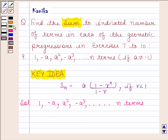We have learned in the key idea that the sum of N terms of a GP, S_N, is given by A times (1 minus R to the power N) divided by (1 minus R), if R is less than 1.